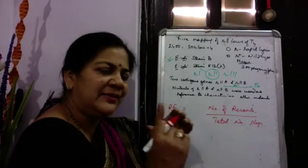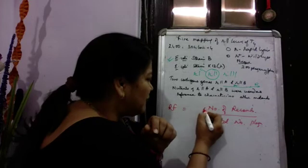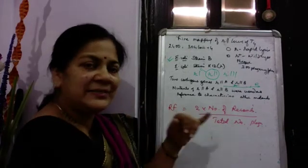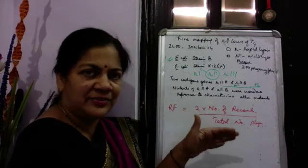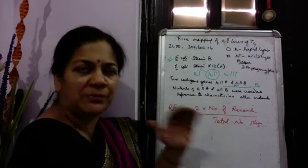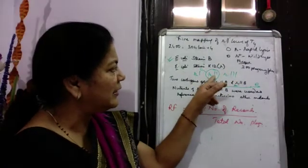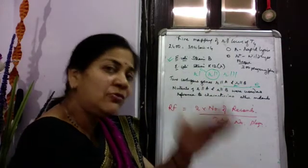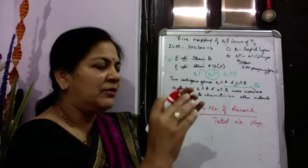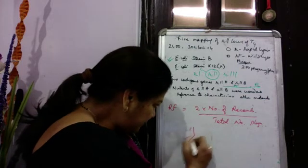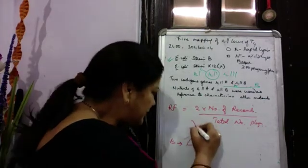Of the recombinants, the double mutant is invisible but the wild type is visible, so you multiply by two to account for both recombinant classes. You first grow the phages in E. coli strain B — where all mutants can grow — then plate on both strain B and strain K-12. On K-12, which is restrictive, only wild-type progeny will grow, allowing you to count recombinants specifically.